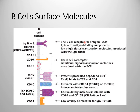Apart from B cell receptors, B cells have a number of different surface molecules on their plasma membrane. As you can see here, the Ig heavy and light chains make up the B cell receptor. Apart from that, there are receptors called CD79a and CD79b, also called Ig alpha and Ig beta heterodimers, which help in signal transduction of B cell activation.